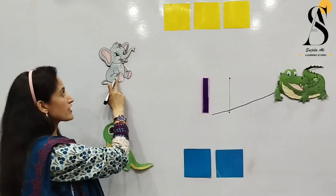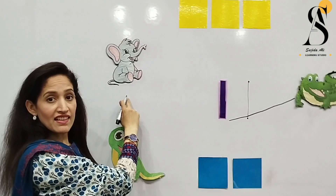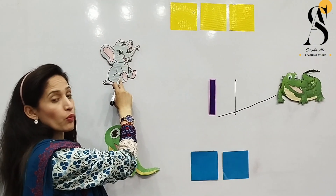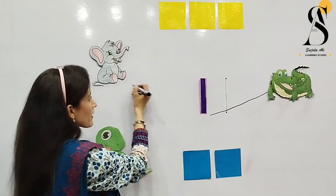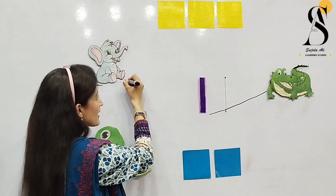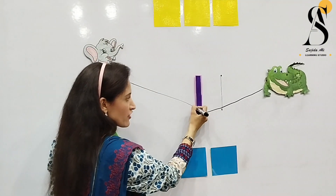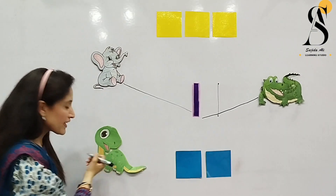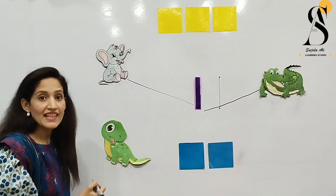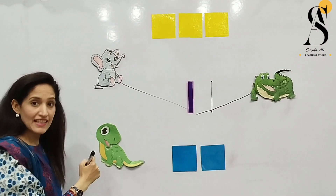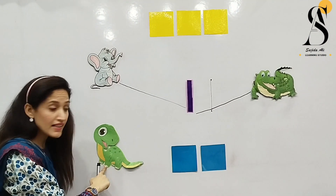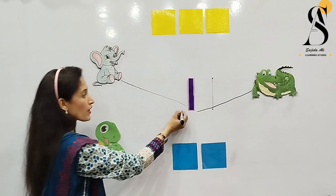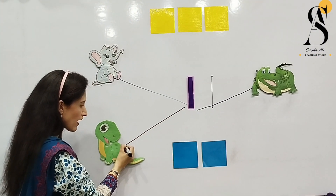Can you see how many elephants are here? They are one. So can we match it with number one? Yes, we can match it. How many dinosaurs are here? They are also one, and we can match one dinosaur with number one.